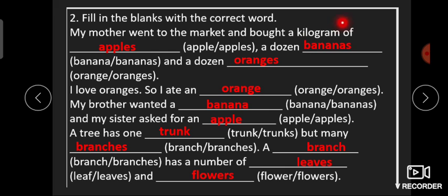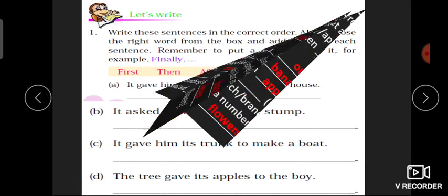تو آپ کو یہ دیکھنا ہے کہ singular اور plural میں سے کونسا آئے گا۔ Kilogram تھا تو plural لیا، dozen میں 12 items ہوتی ہیں تو plural لکھا۔ 'a' اور 'an' کہیں پر بھی نظر آئے تو اس کے بعد فوری طور پر singular word آتا ہے۔ 'One' تھا تو 'trunk'، اور 'many' کے بعد plural — اس لیے 'branches'۔ 'A number of' یعنی کافی تعداد میں — تو یہاں plural words: 'leaves' اور 'flowers'۔